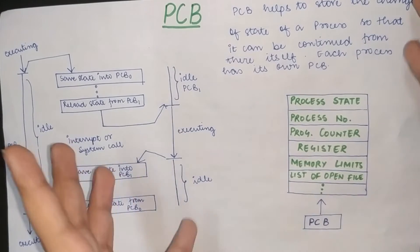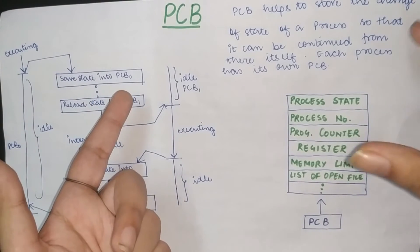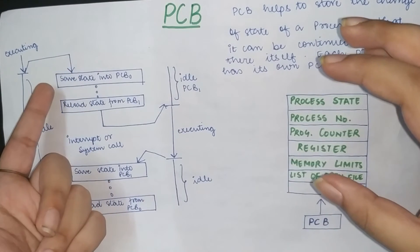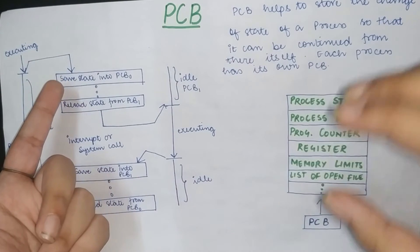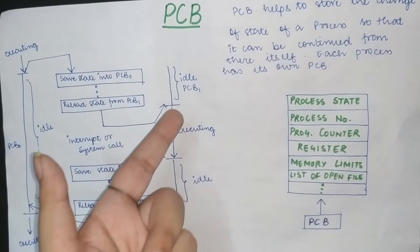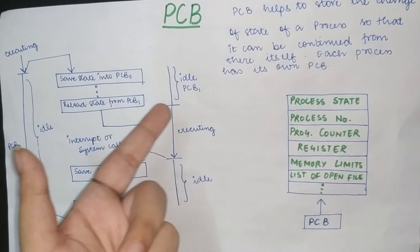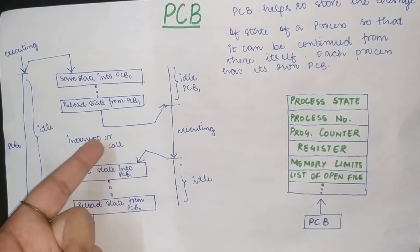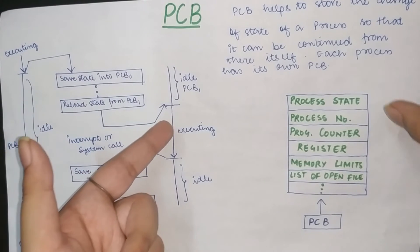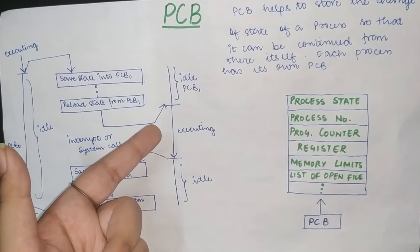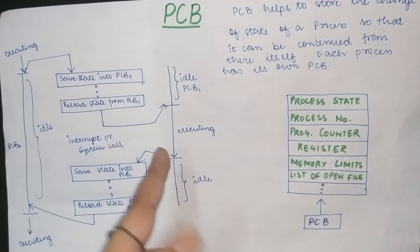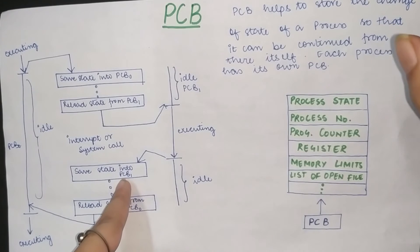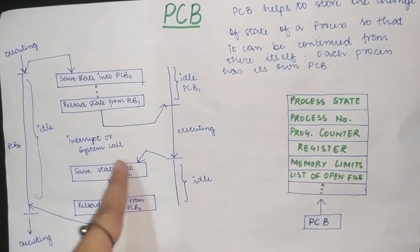First of all, execution started. PCB 0 was executed and then we saved the state. After saving the state, we started the execution of PCB 1. Now PCB 1 is executing, and then there is an interrupt or system call.